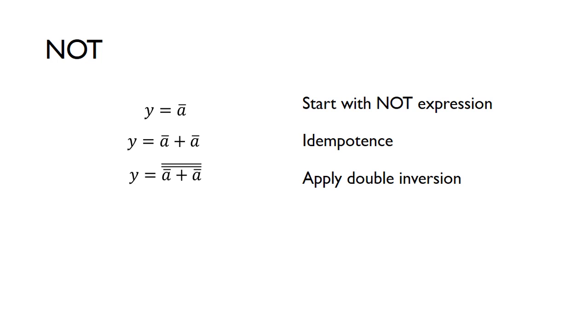And then on top of that we can apply double inversion, because we know that double inversion just cancels out. By applying double inversion to this we're still not actually changing this expression. At this point now we can start to use De Morgan's theorems. Remember, break the line and change the sign.